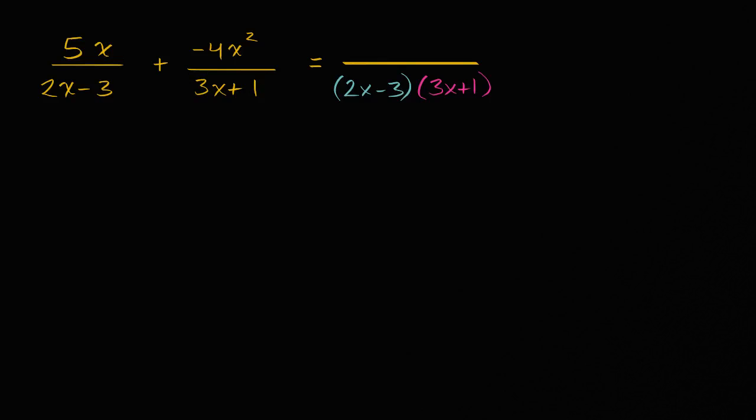And then plus something else over 2x minus three, 2x minus three times 3x plus one, times 3x plus one.